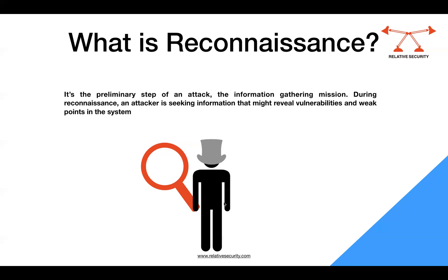There are two types of reconnaissance: active and passive. In active reconnaissance, if you have a good detection team, they may detect activities such as port scanning, probing the firewall, or network research. In passive reconnaissance, the attacker does not let you know they are conducting any activity against your network — they look into open public repositories to find information about your organization.